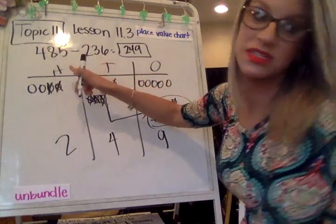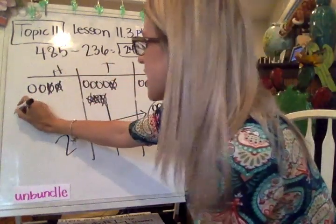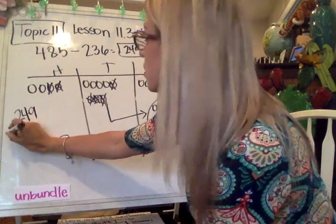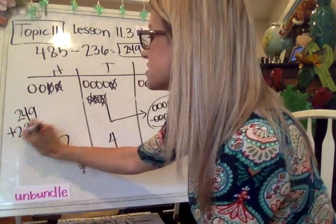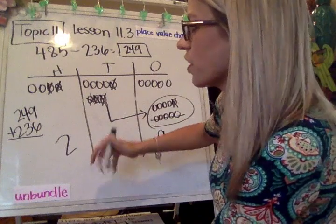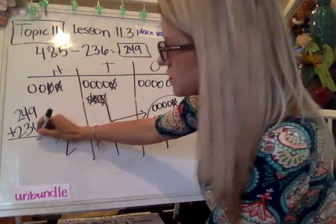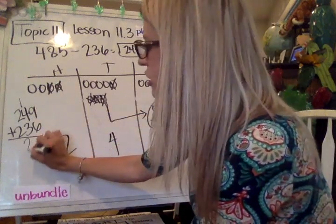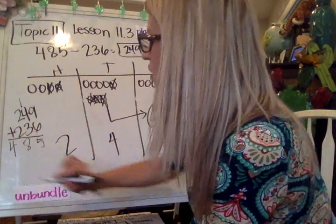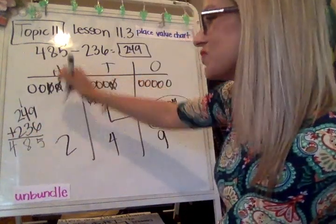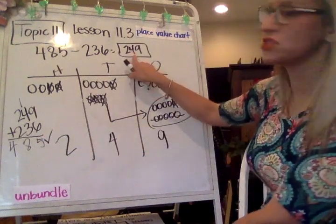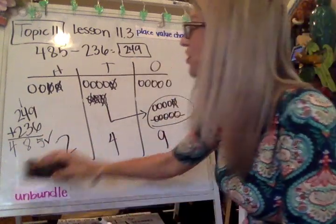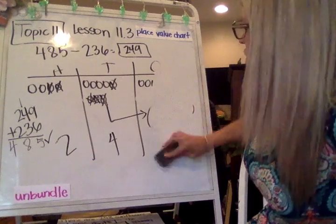So in order to check to see if this is correct, we need to say 249 plus 236, and double check that it equals the 485. So we're going to just quick add these things together. We've got 8 in our tens, and 4 in our hundreds. So 485 matches with the 485. So we know that 249 is the difference between those numbers. This is using the place value chart.